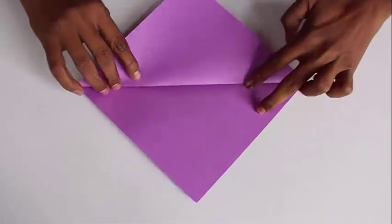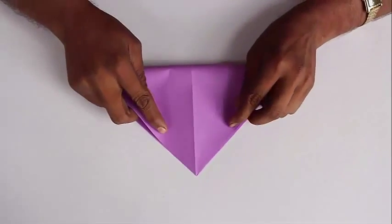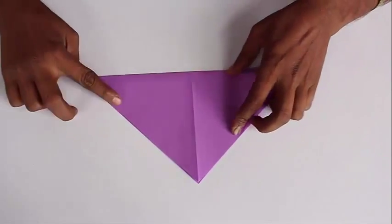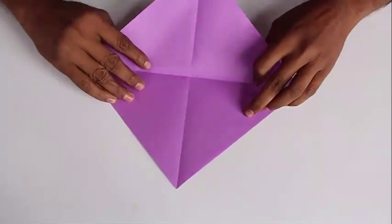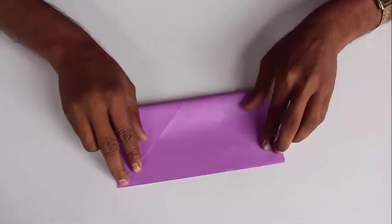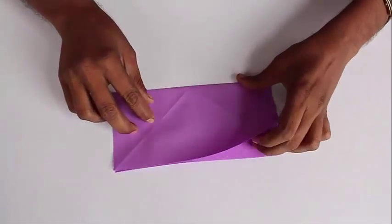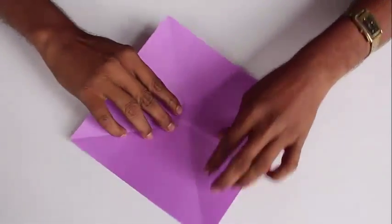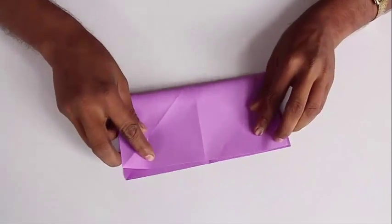For this first fold the two diagonals. Both the diagonals should be creased in the same direction and then fold a minus sign in the midline. Open the paper and then fold a plus sign.